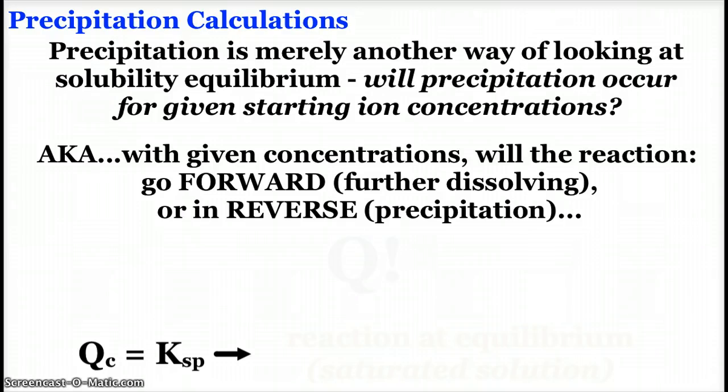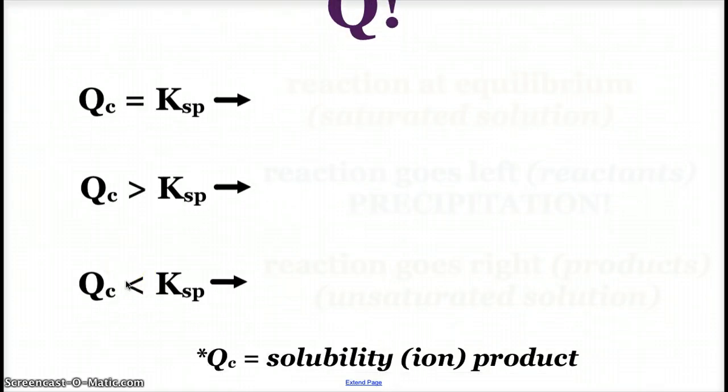And just like we've done with previous K expressions, when we're trying to see if the equilibrium will go to the right or left, we calculate what we remember as Q. And so for solubility, we call Q, QC, the solubility ion product.